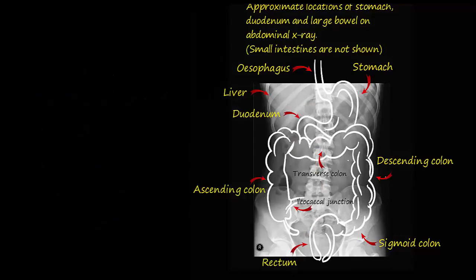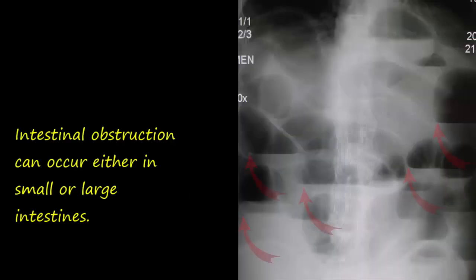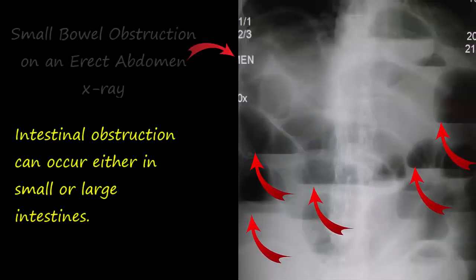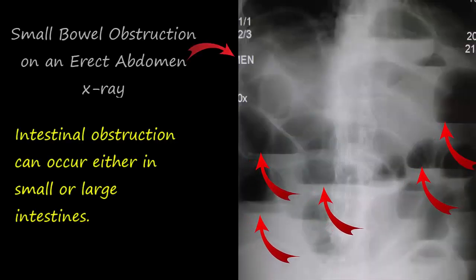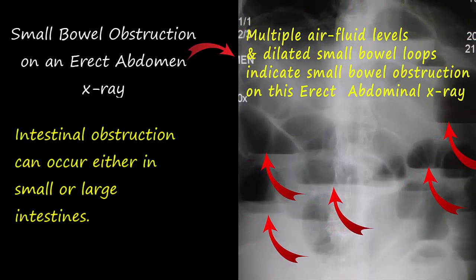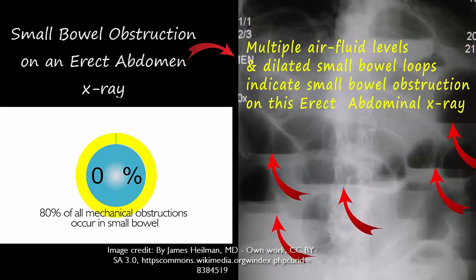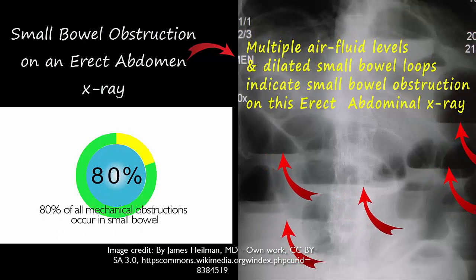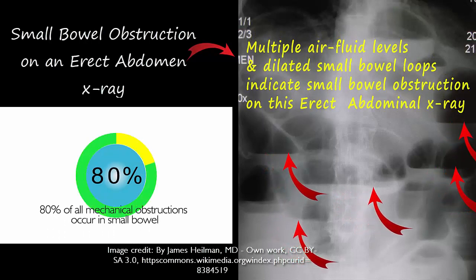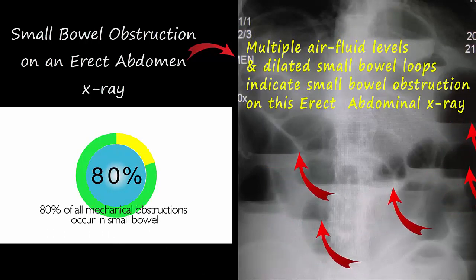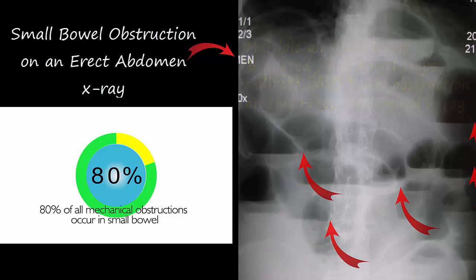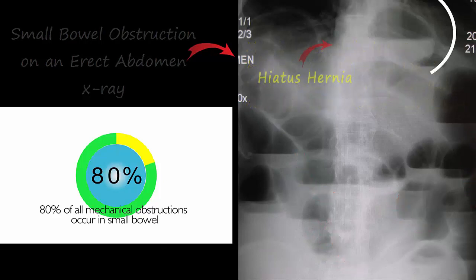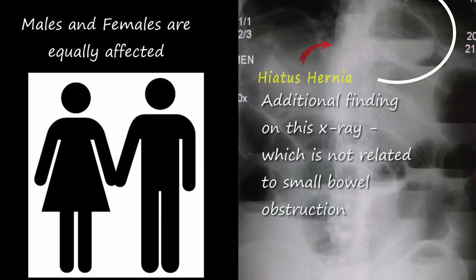Intestinal obstruction can occur either in the small or large intestines. Small bowel obstruction accounts for 80% of all mechanical obstructions, while the remaining 20% are large bowel obstructions. The obstruction can be partial or complete, and males and females are equally affected.